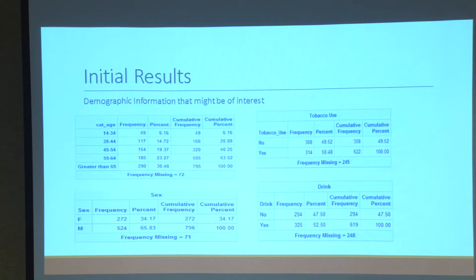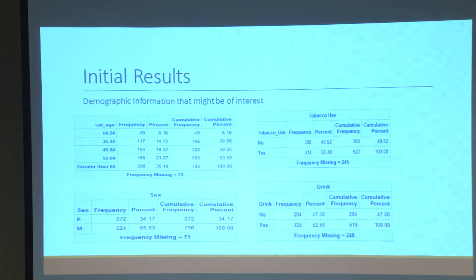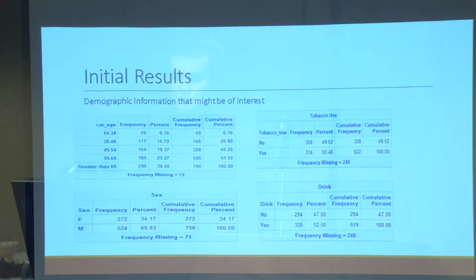A majority of people who developed esophageal cancer smoked. Drinking was also a significant factor, but a bit lower than you would expect compared to tobacco use — around 60% of people didn't drink or drank infrequently, so it's a little more common than you'd expect, but not much.